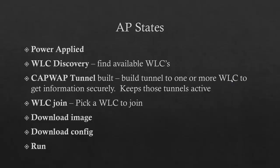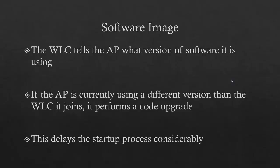The wireless LAN controller is the central point — it pushes out the images and the configurations. The wireless LAN controller tells the access point what version of software it's using. If the access point is using a different version than the LAN controller it joins, it performs a software upgrade or code upgrade, which will delay the startup process considerably. This is why you should only update your wireless LAN controllers in the evening or off hours, because updating the controller software will then update all the access points, causing all wireless on that controller to go down.